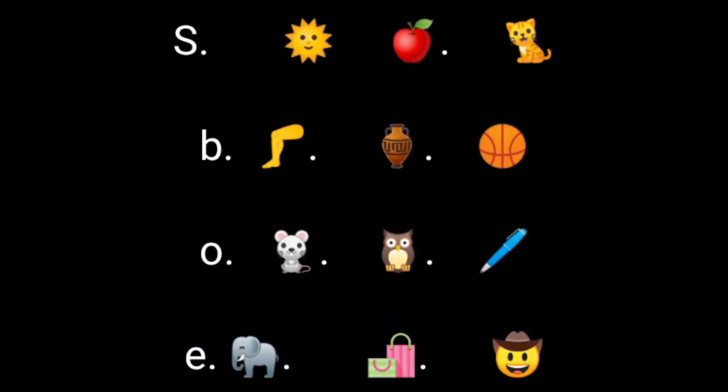The question says: circle the picture that begins with the letter. You have to identify which picture starts with the given letter. Letter is given to you — identify the picture and circle it. Number one: letter S — three pictures are there, circle the correct one. Number two: letter B — find the correct picture and circle it.